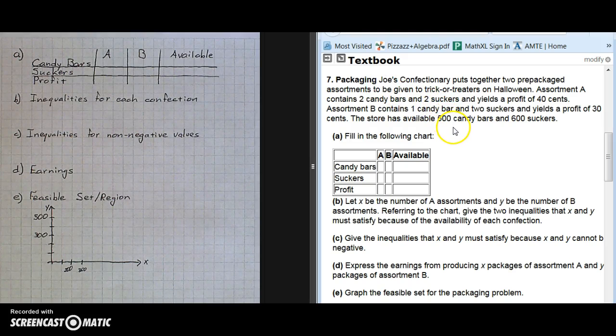Joe's Confectionary puts together two pre-packaged assortments to be given to trick-or-treaters on Halloween. Assortment A contains two candy bars and two suckers and yields a profit of 40 cents. Assortment B contains one candy bar and two suckers and yields a profit of 30 cents. The store has available 500 candy bars and 600 suckers.